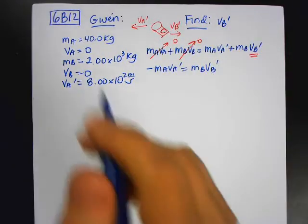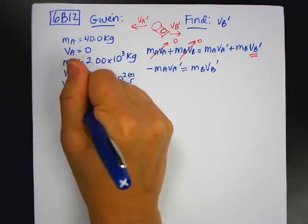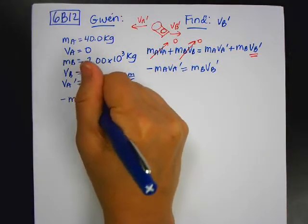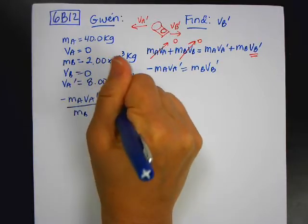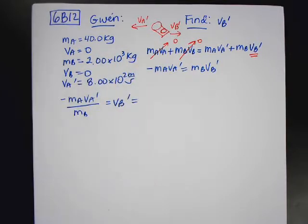But I want to solve for v_B. So negative m_A v_A prime divided by m_B is equal to v_B prime. So now I'm going to substitute in my values.